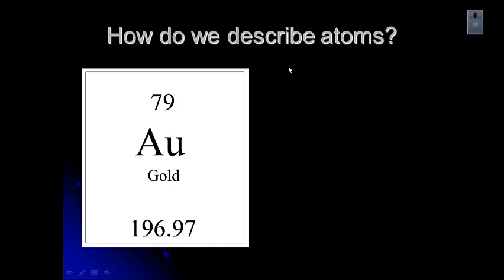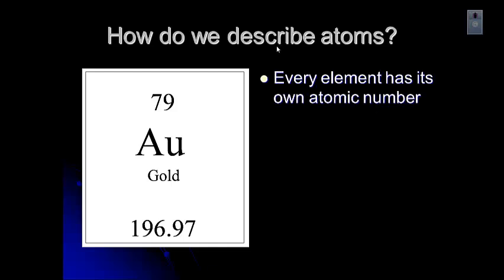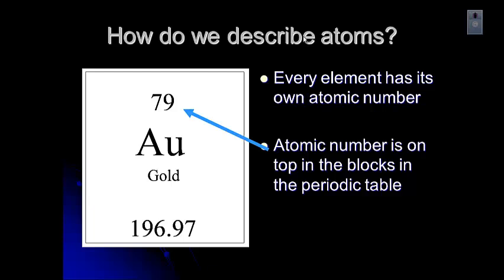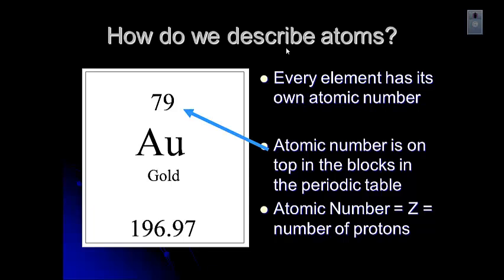Let's talk about how we describe atoms. You probably recognize this as a box from your periodic table. Every element has its own atomic number, and the atomic number is at the top of the block on the periodic table. We call the atomic number Z, and it tells us how many protons an atom has. Once we know the number of protons something has, we know what it is. Gold always has 79 protons. Anything that has 79 protons, we always call gold, regardless of what changes. It defines an element, the atomic number or number of protons. It's kind of like the DNA. It defines exactly what it is.